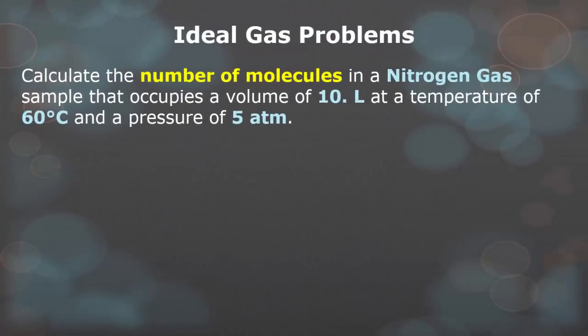Now we're trying to find the amount of molecules in a nitrogen gas sample that occupies a volume of 10 liters at a temperature of 60 degrees Celsius and a pressure of 5 atmospheres. So this means that you first have to convert 60 degrees Celsius into Kelvin. Then you're going to plug it in to find the number of moles you have. Once you have figured out how many moles you have, you will multiply it by Avogadro's number.